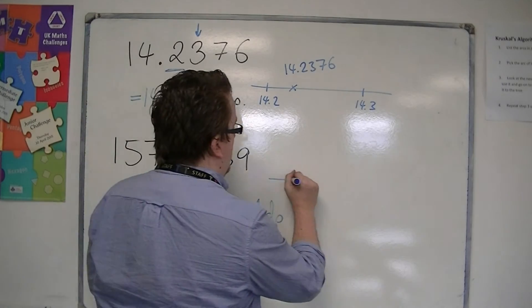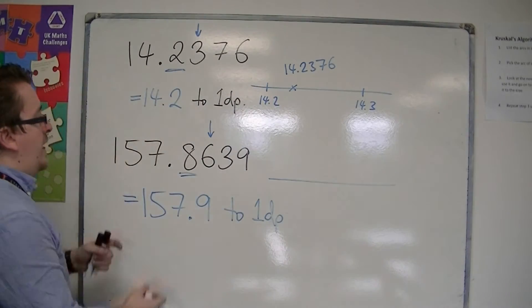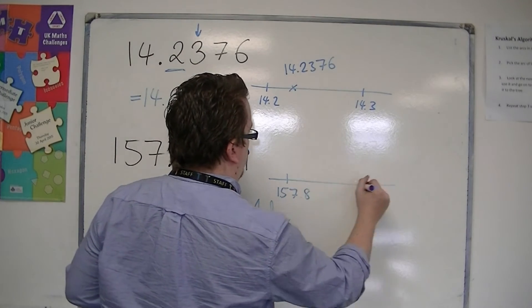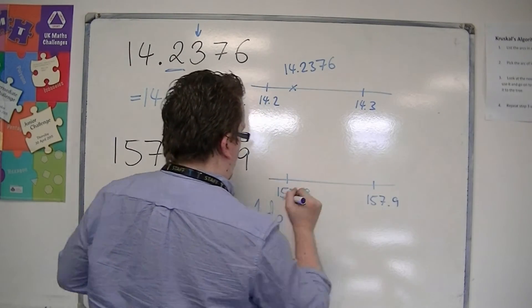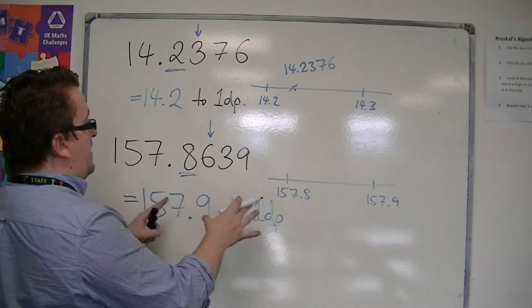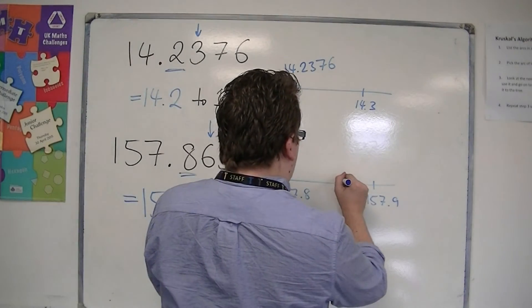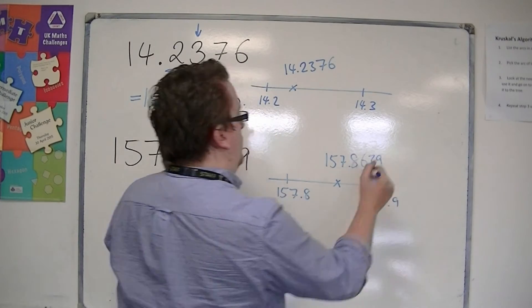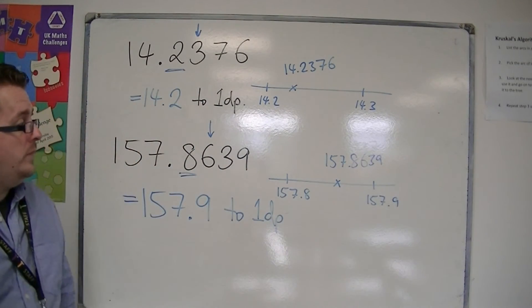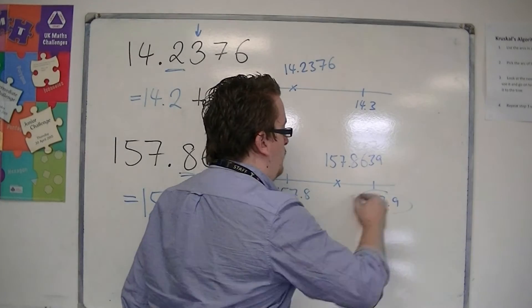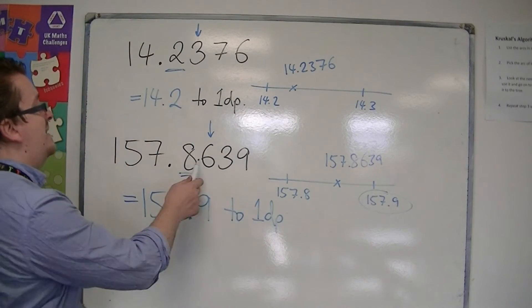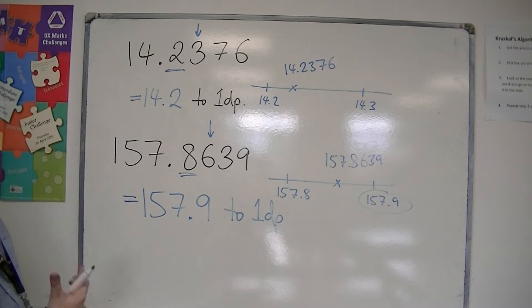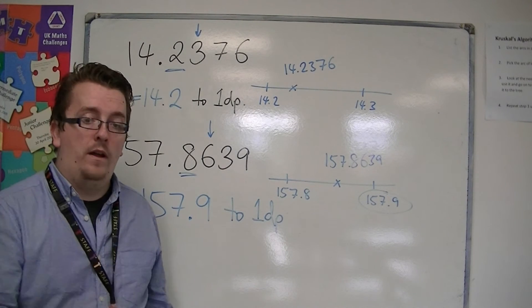So on our number line, we're looking at 157.8, 157.9, and the 157.8639 would be about there. And so it would be closer to the 157.9 as dictated by the six. So that is to one decimal place and that is how it works.